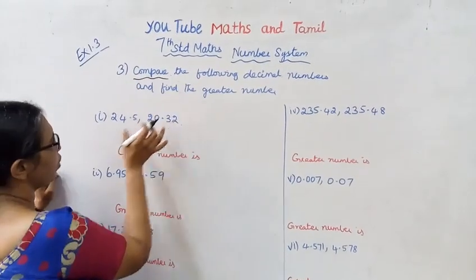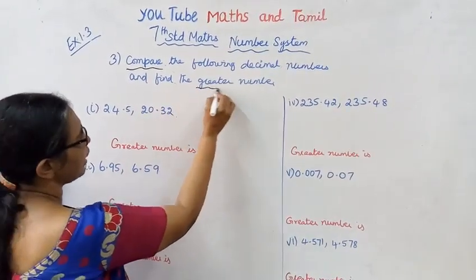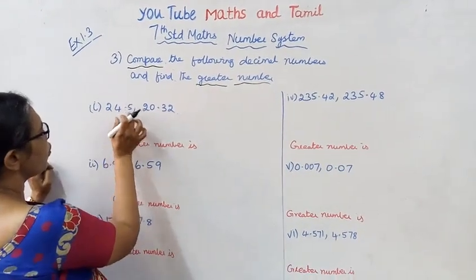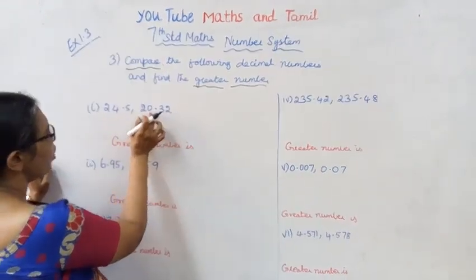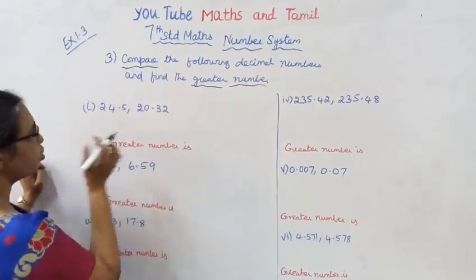Compare these two numbers and find which is the greater number. The numbers are 24.5 and 20.32.